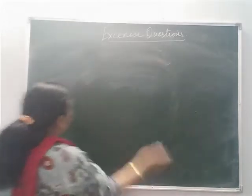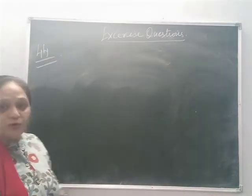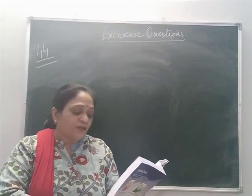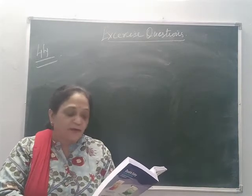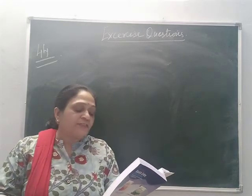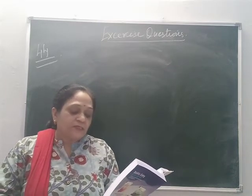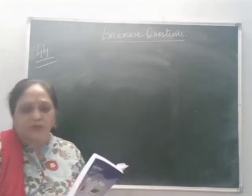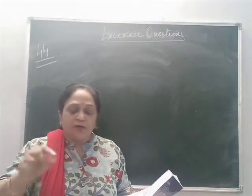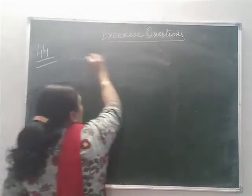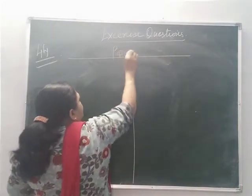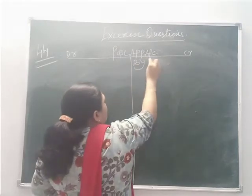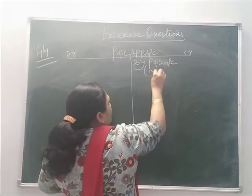After this clarification, we start with question number 44. C and D are partners. They have contributed 1 lakh and 60,000 as capital. Interest is payable at 6% per annum. D is entitled to a salary of 3,000 per month. In the year ending March, the profit was 80,000 before interest and salary. You have to prepare the profit and loss appropriation account, providing interest on capital and salary. First, transfer the profit from P&L account — net profit transferred is 80,000.